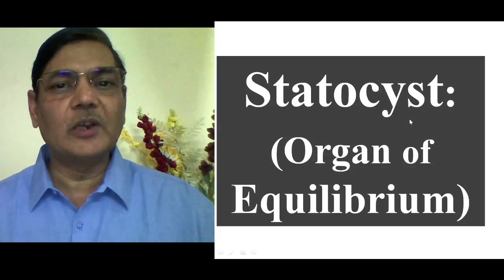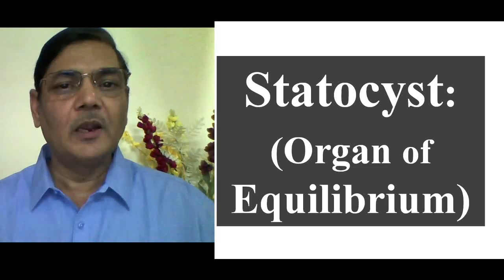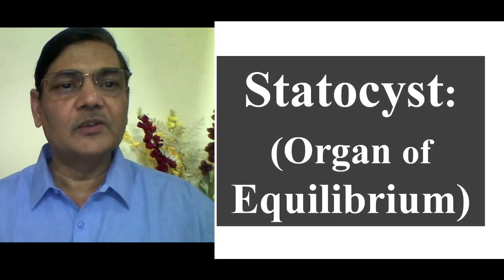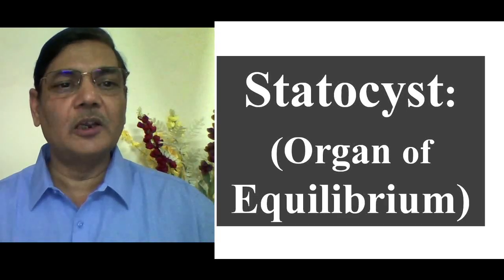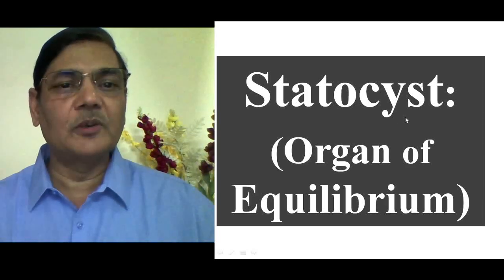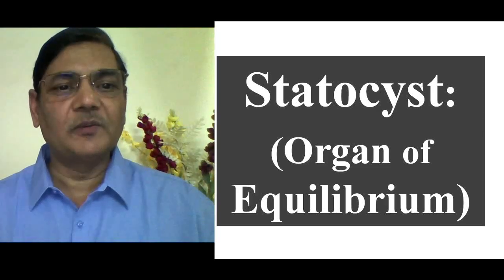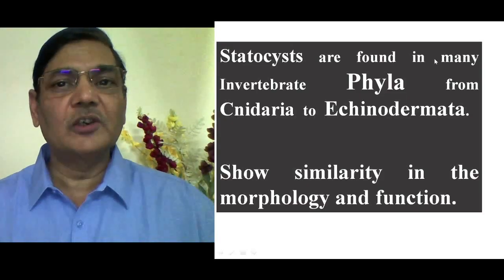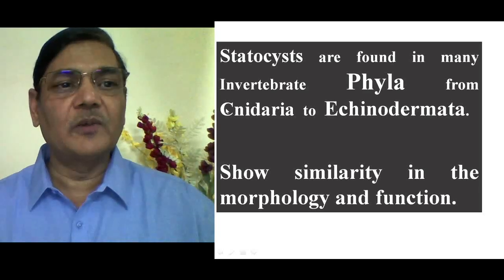Let me discuss about the Statocyst, which is known to be an organ of equilibrium. It is also considered as a balancing organ. This structure is found in all invertebrate animals, whether it is Hydra or a highly developed Echinoderm. In all such forms, we find the presence of Statocyst as a balancing structure. These structures are found in many invertebrate phyla, starting from Cnidaria up to Echinodermata.